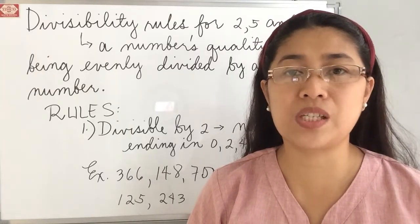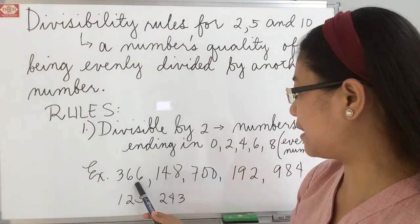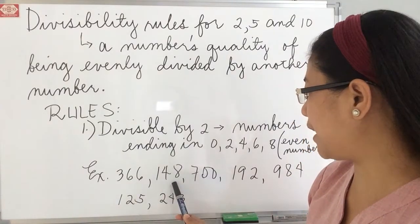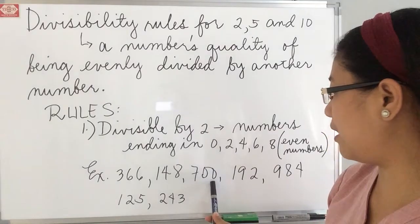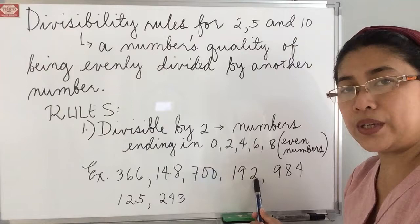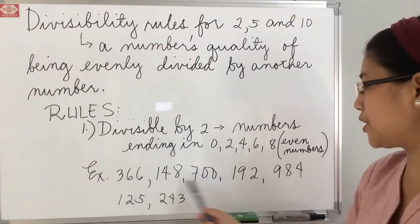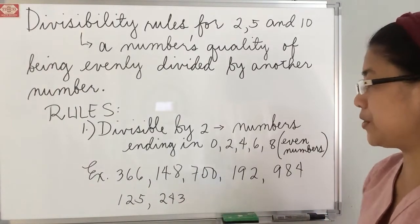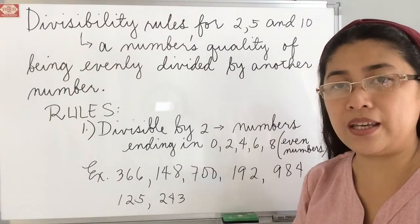Meaning to say it is divisible by 2. For example, we have 366, it ends with number 6; 148, ends with number 8; 700, ends with 0; 192, ends with 2; 984, ends with 4. So all of these numbers end with even numbers. Therefore, they are divisible by 2.